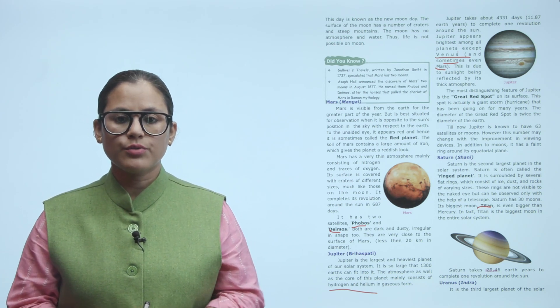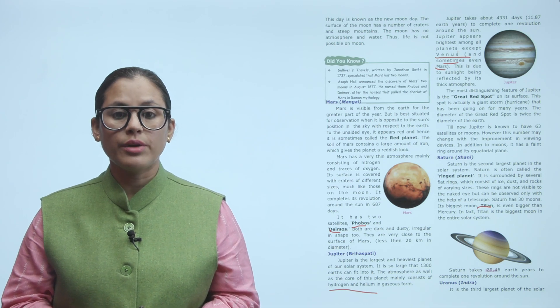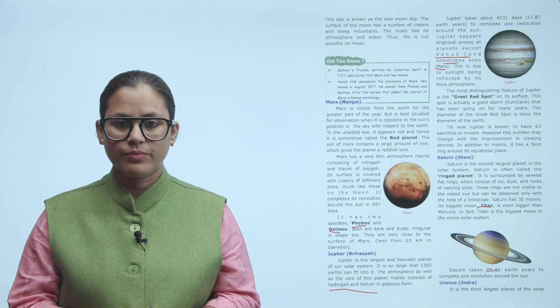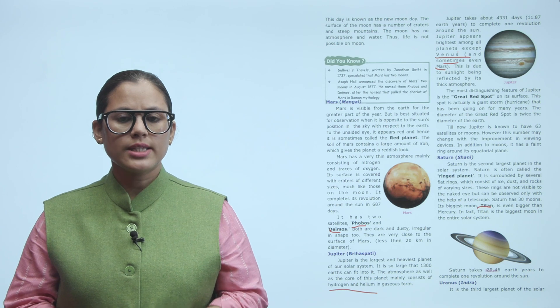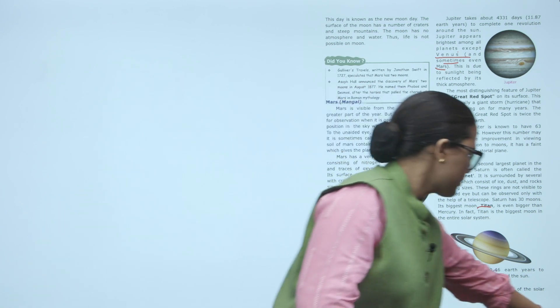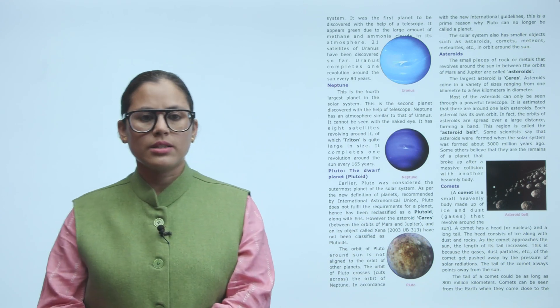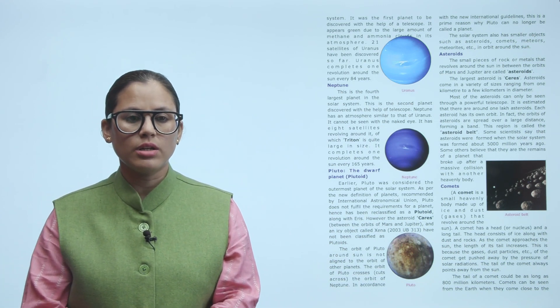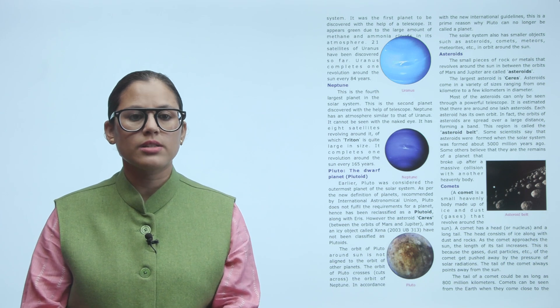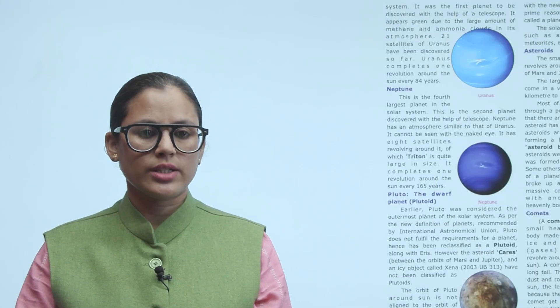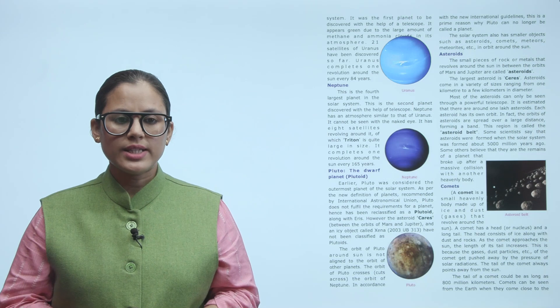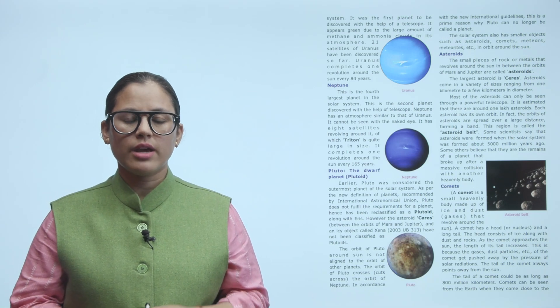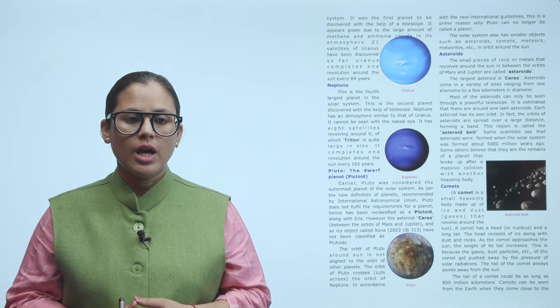Uranus (Indra): It is the third largest planet of the solar system. It was the first planet to be discovered with the help of a telescope. It appears green due to the large amount of methane and ammonia clouds in its atmosphere. Twenty-one satellites of Uranus have been discovered so far. Uranus completes one revolution around the sun every 84 years.